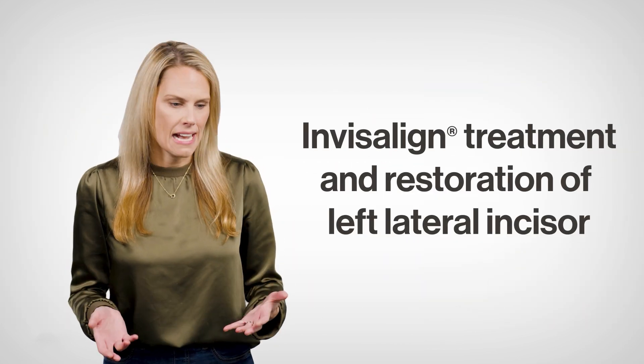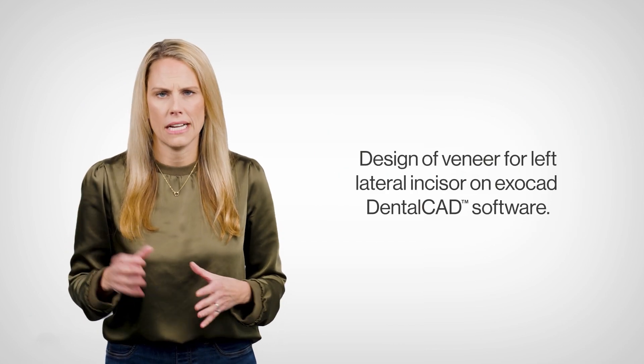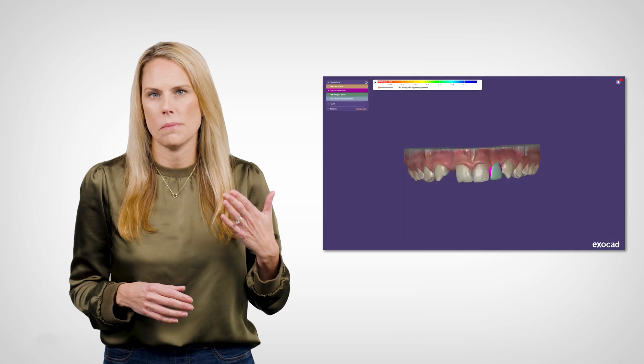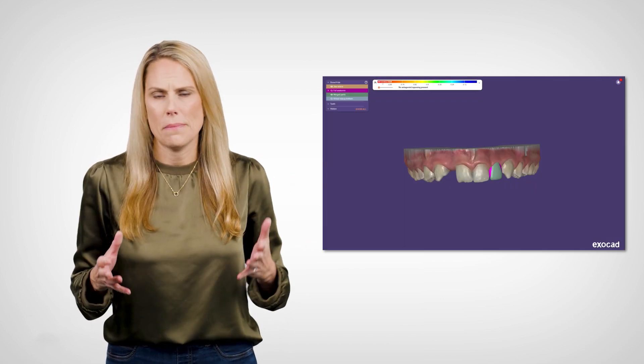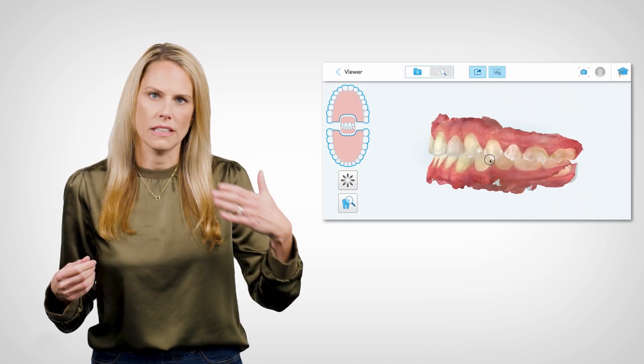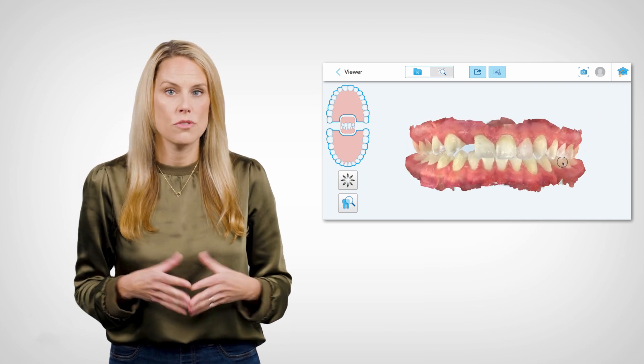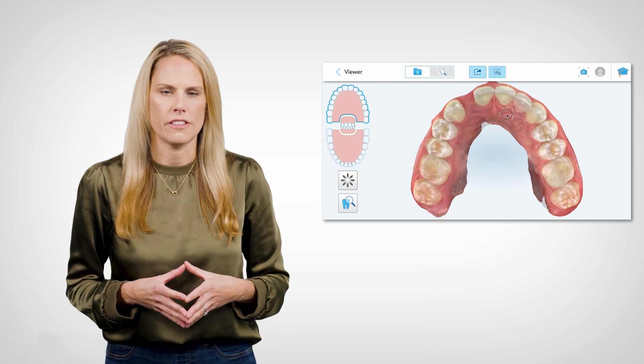So I went ahead and designed for her in ExoCAD, quickly did a mock-up for the peg lateral because I wanted to make sure dimensionally we had the left lateral, the shape and size that we wanted so that we could continue pre-planning the Pontic space on the right side. So we planned her in ExoCAD, printed a digital model, brought her into the clinic and did a quick bonding procedure on the left side based on that wax up using an Essex tray to be able to make a bonded restoration on that left lateral.